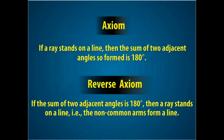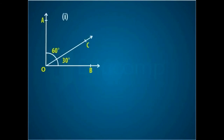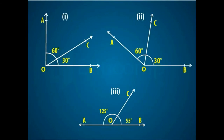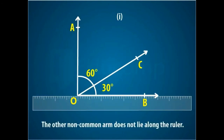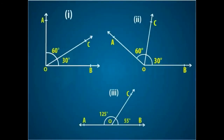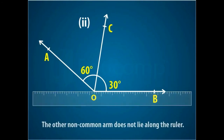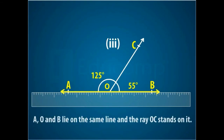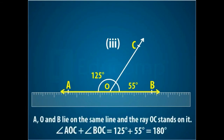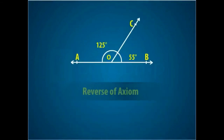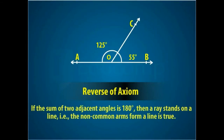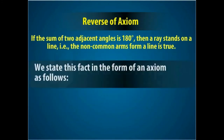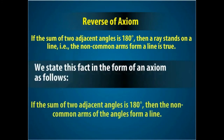If the sum of two adjacent angles is 180, then the non-common arms form a line.